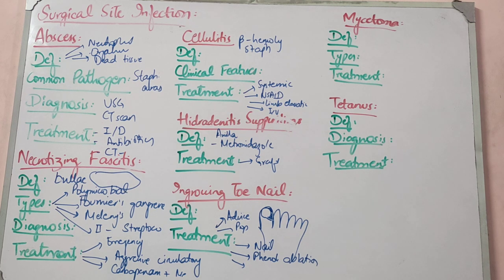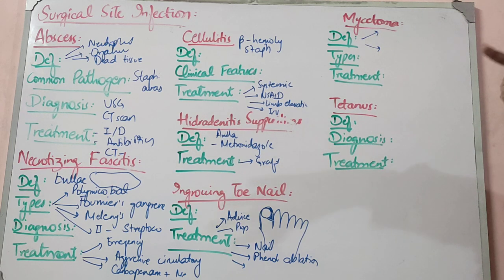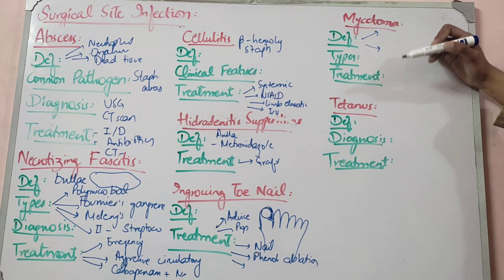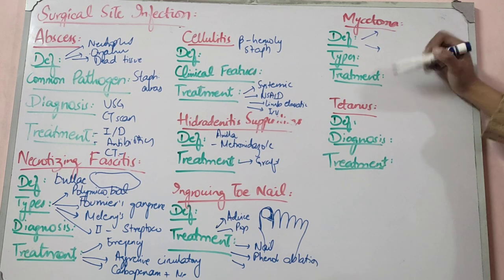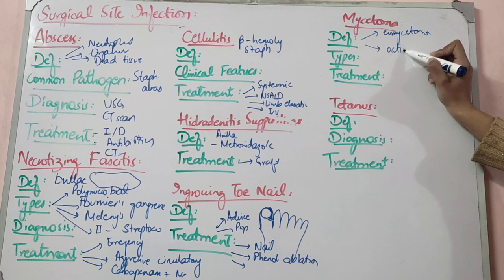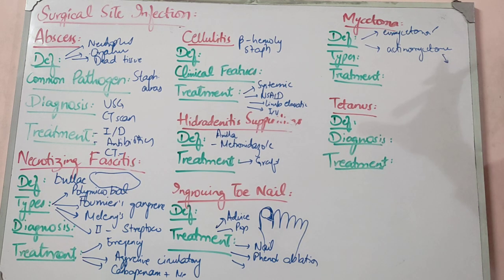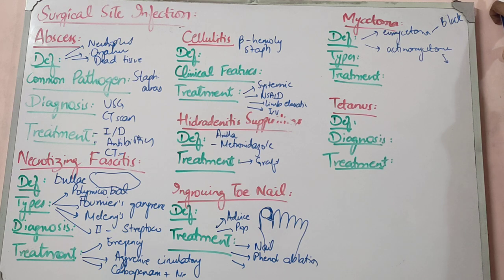Mycetoma is a fungal or bacterial infection involving cuts in the sole of the foot — common in those who walk barefoot, like washermen. If it is fungal, we call it eumycetoma — a black color fungus. If bacterial, it is actinomycetoma. It presents as a wound that gets enlarged with multiple pus-discharging sinuses.